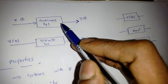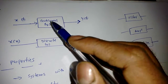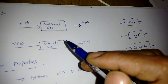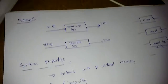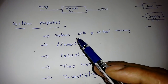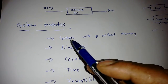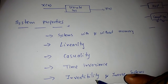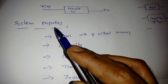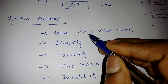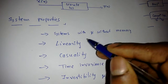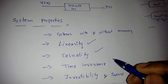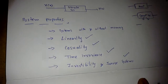This system will process some input signals and produce some output signals. It may be a continuous system or a discrete system. The main properties we have to discuss — which GATE regularly tests — are linearity, causality, time invariance, invertibility, and memory.